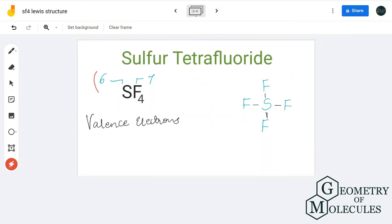Sulfur has six valence electrons, whereas fluorine has seven valence electrons. But as we have four fluorine atoms, we'll multiply this number by four, which will give us 28 valence electrons. In total, there are 34 valence electrons for SF4.